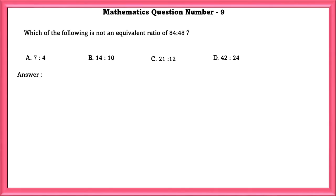Mathematics Question Number 9: Which of the following is not an equivalent ratio of 84 is to 48? In order to check this, we have to find the equivalent fraction of 84 by 48. If we divide this by 12, to find the equivalent fraction, we will get 7 by 4 as the equivalent fraction. Similarly, by 6, we will get 14 by 8. By 4, we will get 21 by 12. By 2, we will get 42 by 24. Here, the second one, that is the B option, is not corresponding to the option over here. And they have asked not an equivalent ratio. So, we will choose the B option.